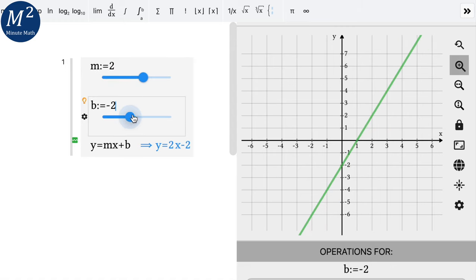Our y-intercept, let's go make that. What happens if it's zero? Look at the equation. Y equals 2x plus zero. Don't need to write plus zero there, so we can write y equals 2x.